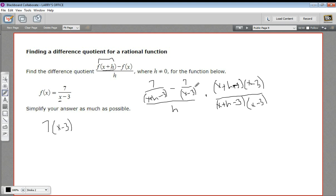That's quite a bit simpler. And then this one, the x minus 3 would cancel. And I'd just get left with the 7 times that. So 7 times x plus h minus 3. Now, all that is over h times x plus h minus 3 times x minus 3.